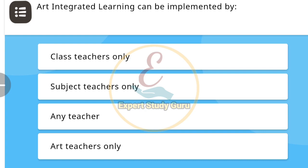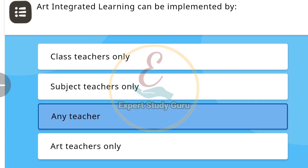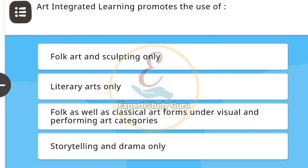Nishtha Module 4: Art Integrated Learning. First question of the Main Quiz: Art Integrated Learning can be implemented by — the correct answer is any teacher. Next: Art Integrated Learning promotes the use of —